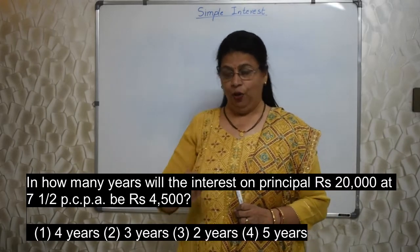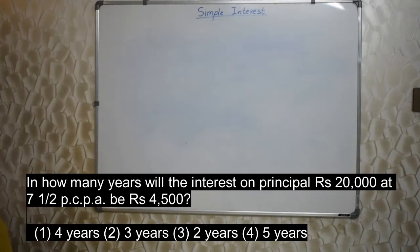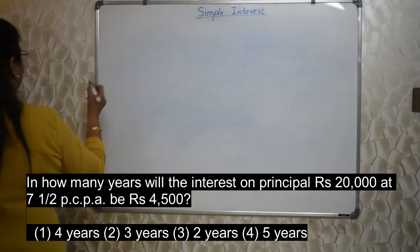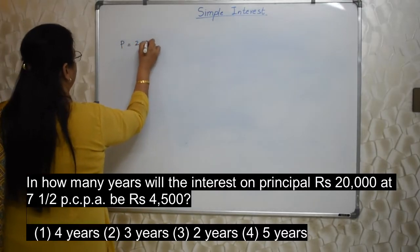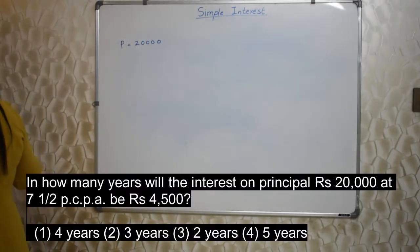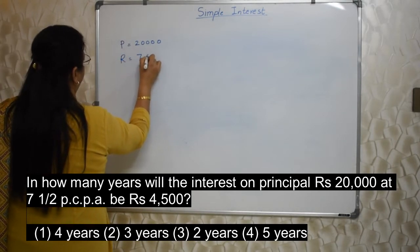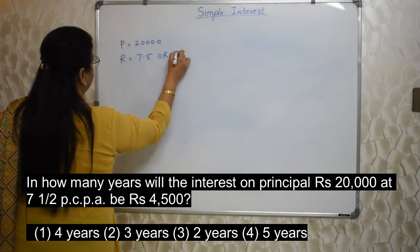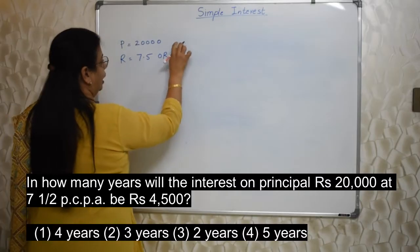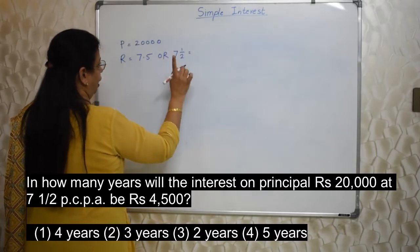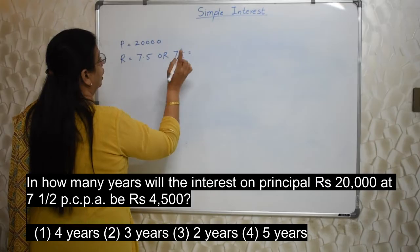The interest word is in the beginning of the question. So you have to read that question properly. That 4,500 is not principal. It is the interest. Okay. So reading part is very very important. In how many years means N is not given. N we need to find out. In how many years will the interest on principal 20,000 means P is 20,000. At 7.5% rate is 7.5. Or you can write as 7½. Means nothing can be done in the form of mixed fraction. So you have to convert this into improper fraction.